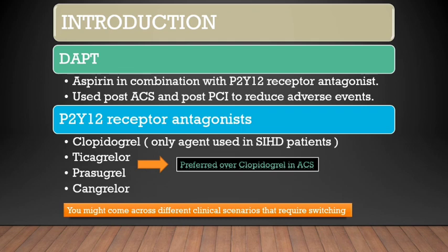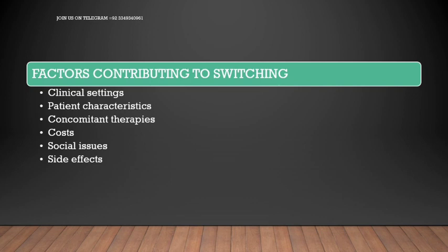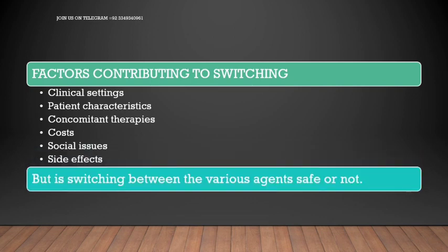In acute coronary syndromes, different clinical scenarios may arise that require switching. The availability of different oral P2Y12 inhibitors has enabled physicians to contemplate switching among therapies. The recent introduction of the intravenous P2Y12 inhibitor cangrelor further adds to the multitude of modalities and settings in which switching may occur. Some contributing factors include clinical settings, patient characteristics such as elderly patients, patients with low body mass index, concomitant oral anticoagulant therapies, cost issues, and medication side effects.